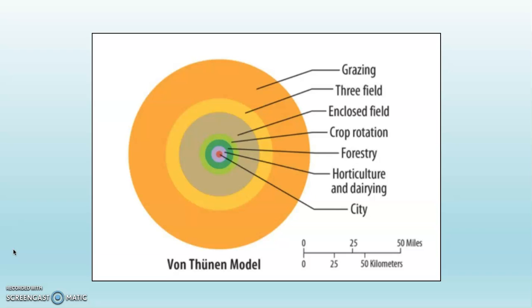Keep in mind that when von Thunen proposed this model, which was based on northern Germany in the first half of the 19th century, there was little to no urban growth going on in those little farming towns and villages in northern Germany. So the relationship between farms and cities would have been different from what it is today.